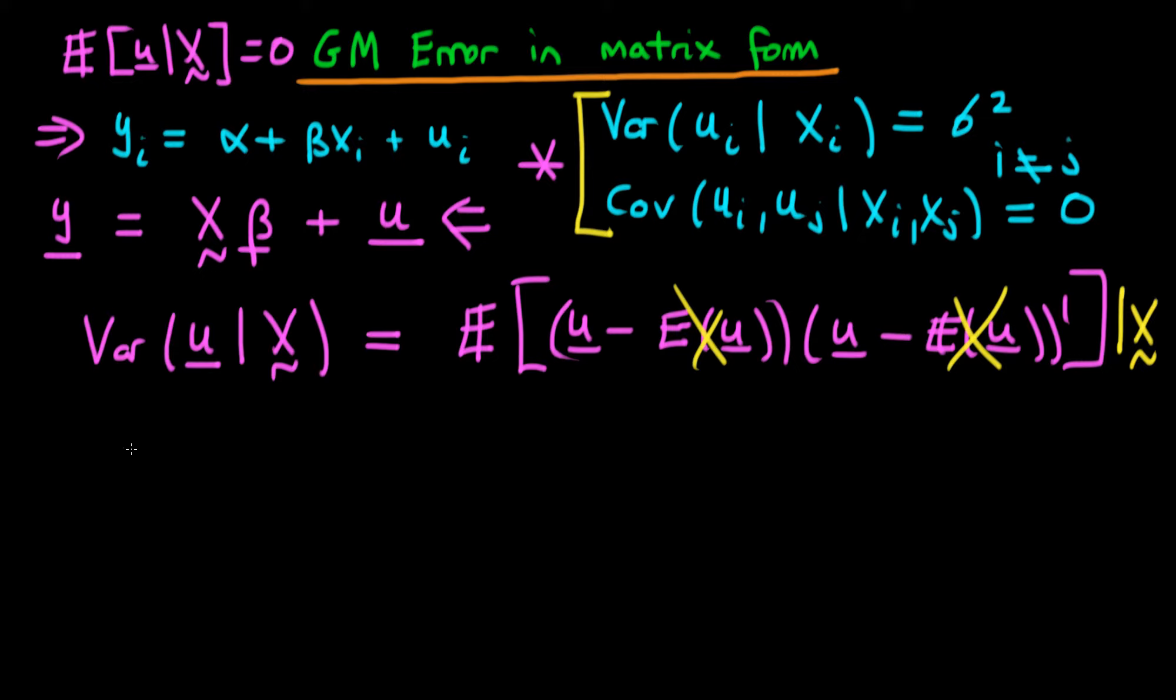So that means we can rewrite our variance as equal to the expectation of u times u' given that we have our independent variables X. And we can write this out in long form if we use the definitions of u and u'.